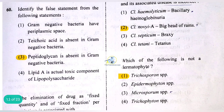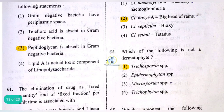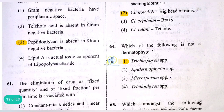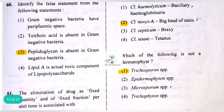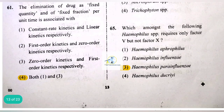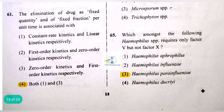From the following statements, 'peptidoglycan is absent in gram-negative bacteria' is the false statement. The elimination of a drug as a fixed quantity and as a fixed fraction per unit time is associated with zero-order kinetics and first-order kinetics respectively.